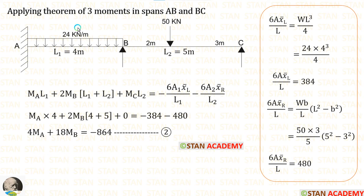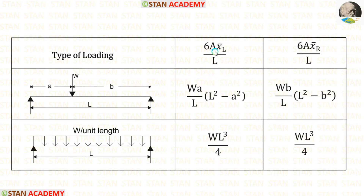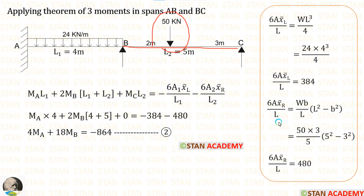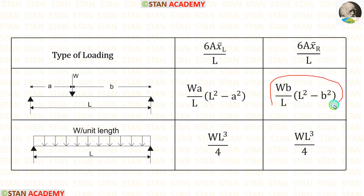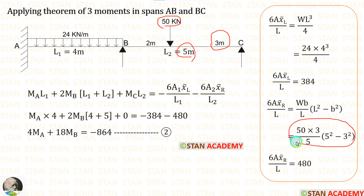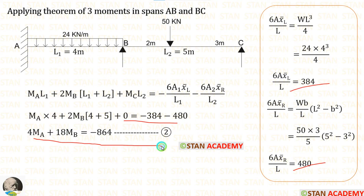Now using the formulas, let us make the second equation. In span AB, UDL is acting and we need 6AX̄_left/L. Using the formula WL³/4, we get 384. In span BC, a point load is acting and we need 6AX̄_right/L. The formula is (WB/L)(L² − B²). Here W = 50, B = 3, L = 5, giving 480. Applying these values, we are making the second equation.